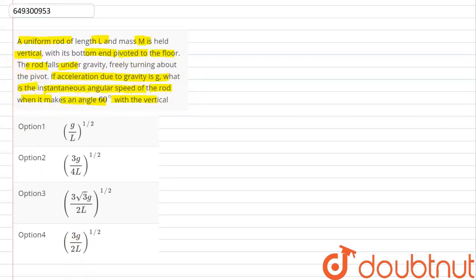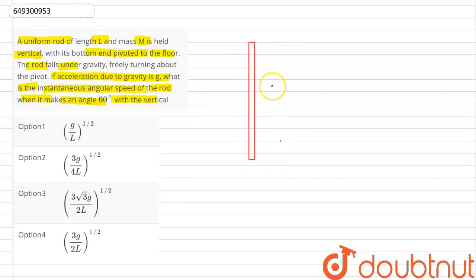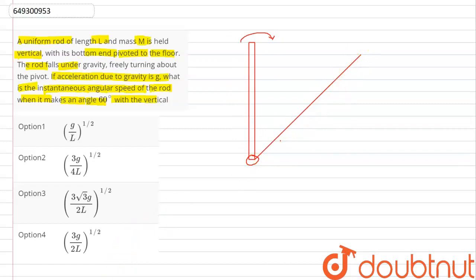So first let's understand what we have to find. We have a rod that was initially vertical and finally its position is at an angle. Here it is pivoted at the bottom. That is the final state — the rod has fallen to the side. We need to find the angular speed at the final position.